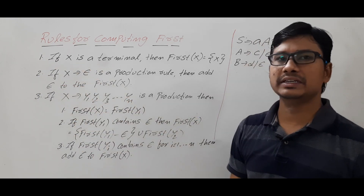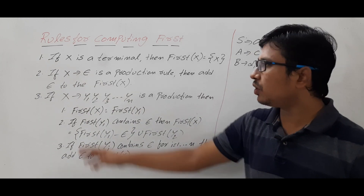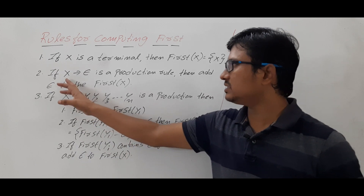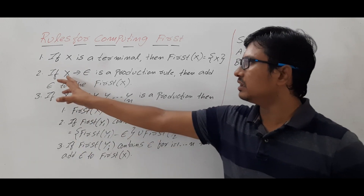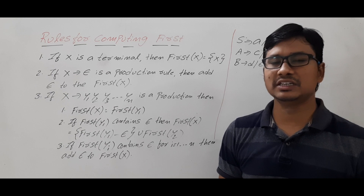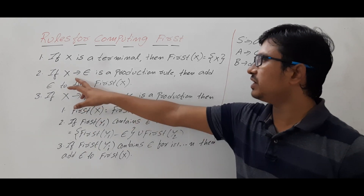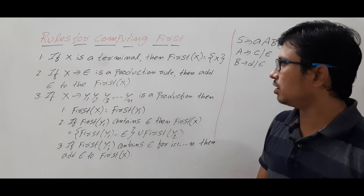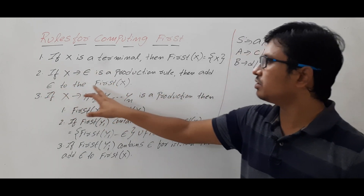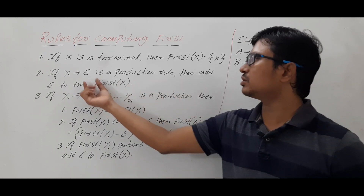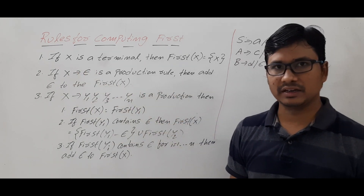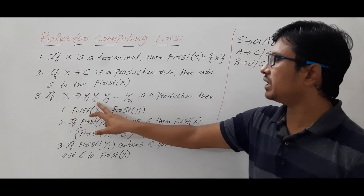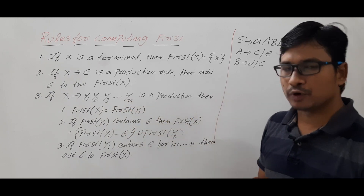Rule 2: If X → ε is a production, then X is a non-terminal. If X is a non-terminal and you have a production X → ε, then add ε to FIRST(X). So FIRST(X) contains ε.